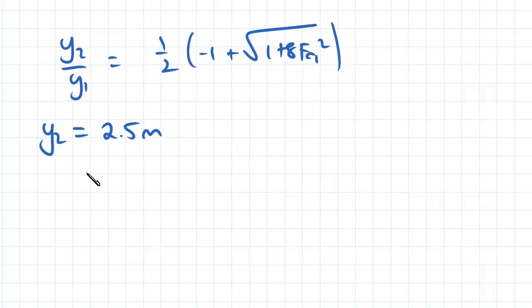So from that, we can then rearrange this formula and get 5 plus Y1 equal to Y1 multiplied by 1 plus 8 times the Froude number at 1 squared.